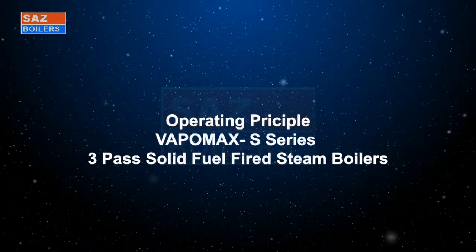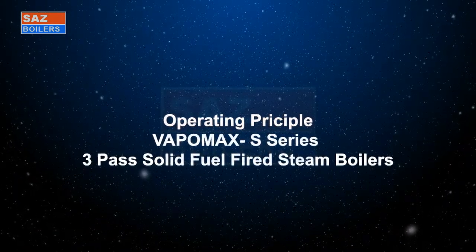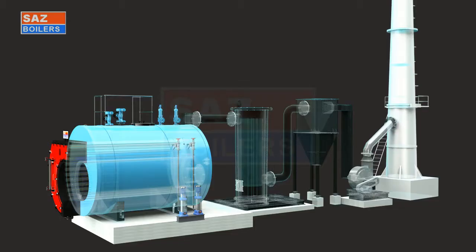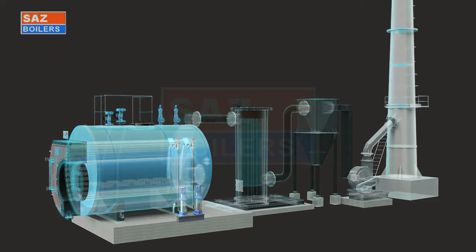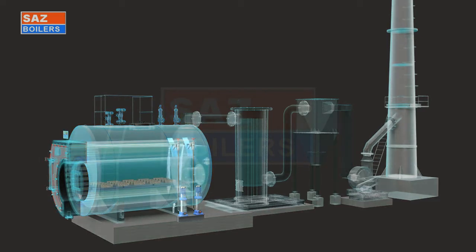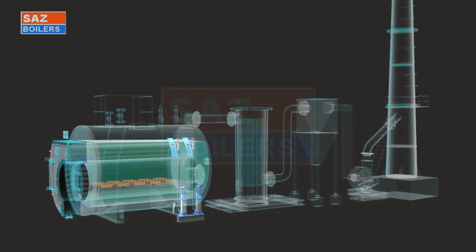Operating principle of Vipomax S series 3-pass solid fuel fired steam boiler: First, feed water pump is started to fill the soft water into boiler shell. Normal boiler level is maintained automatically by level controller and feed pump. If the water goes below the low level, ID fan stops immediately.